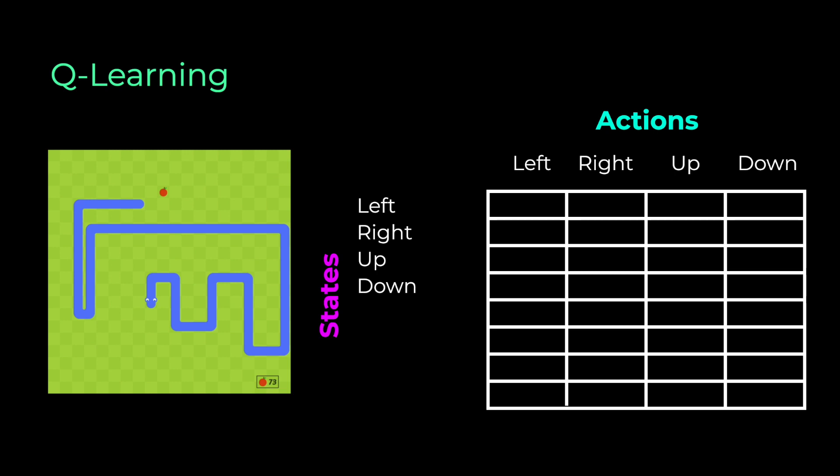But of course, we can add more states to describe the current situation. For example, we can describe the location of the food and add the states food is left of the snake, right, up or down. We could also do the same thing with the walls and describe the danger. But for simplicity, I leave this out here. But you see, the more states we add here, the more information we have about the environment, but also the more complex our system will get.